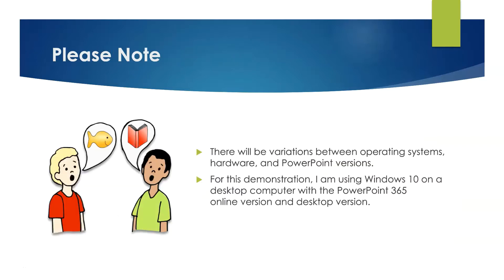If what you're seeing on my screen looks different than your own screen, keep in mind that there are variations between operating systems, hardware, and PowerPoint versions. So if I'm on Windows and you're on a Mac, or if there's an iPad, or if you're using PowerPoint 2019 and I'm using 365, things can look different. For this demonstration I'm using Windows 10 on a desktop computer with PowerPoint 365, and I'm going to be using both the online version and the desktop version.